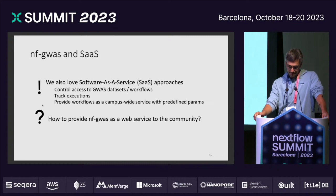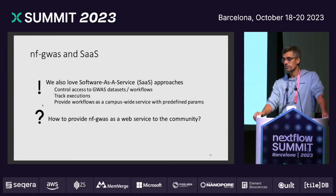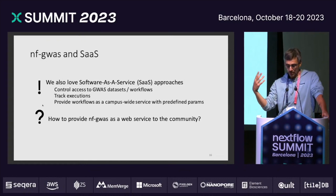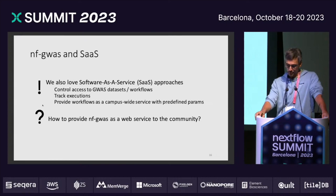Going back to software as a service: now we have quite a nice pipeline, NF-GWAS. It's publicly available — you can download and use it. But our background is software as a service. Coming from the imputation server, we see all the big advantages of running that graphically. For GWAS analysis, sometimes you want to have control and access to different GWAS datasets, track executions, and on our campus it would be nice to have a predefined service and let other researchers use it with predefined parameters. Our question is how to provide NF-GWAS as a web service to the community.